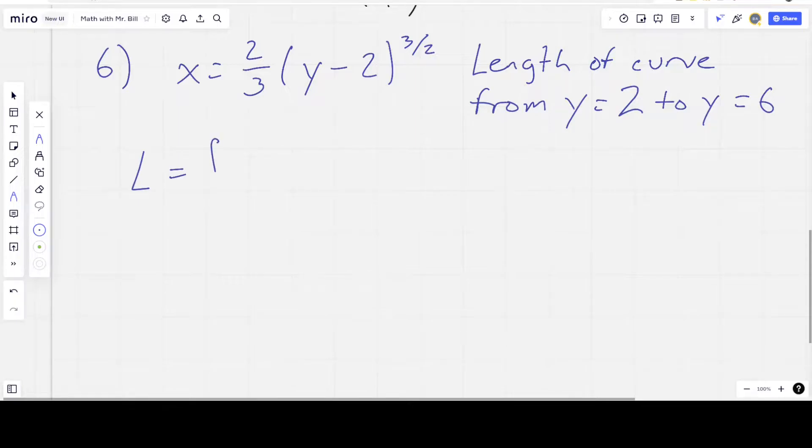So the length of the curve is equal to, well, from one place to the next. And since we're dealing with y values, we're going to go from c to d instead of a to b. That's often how you'll see it. And then the length formula is actually kind of a derivation of the hypotenuse. It's the square root of 1 plus (dx/dy) squared dy.